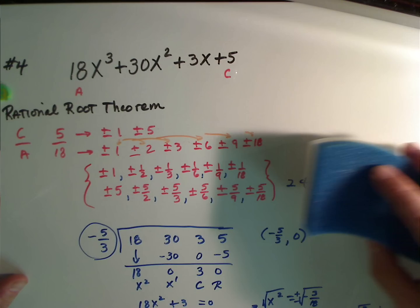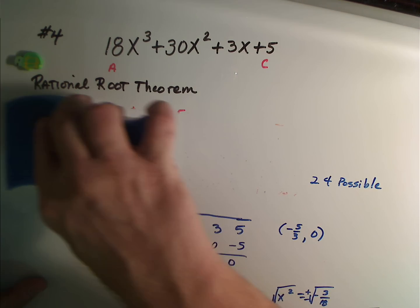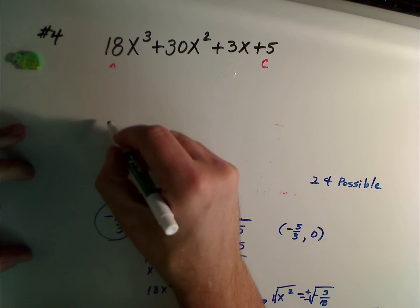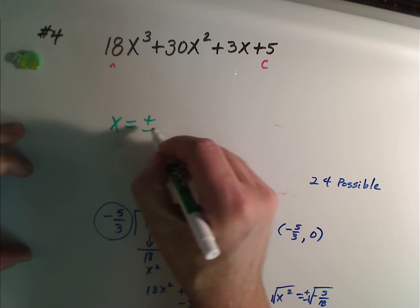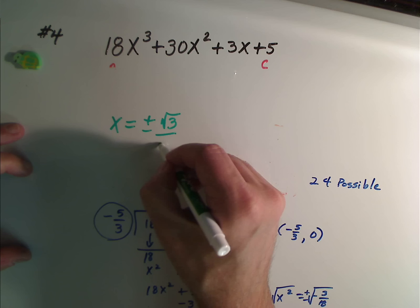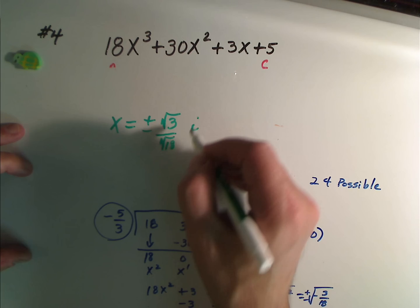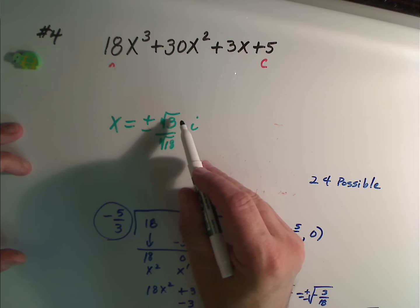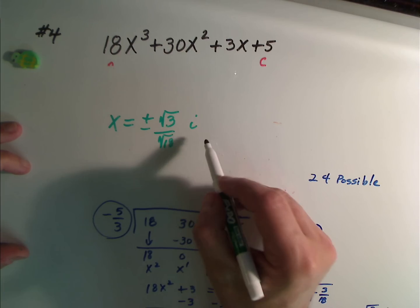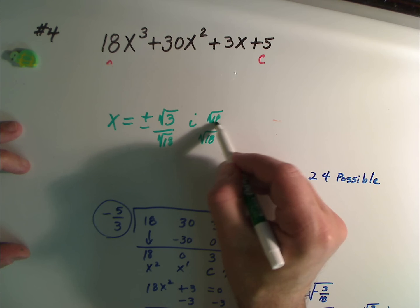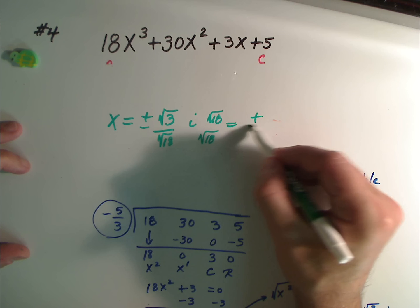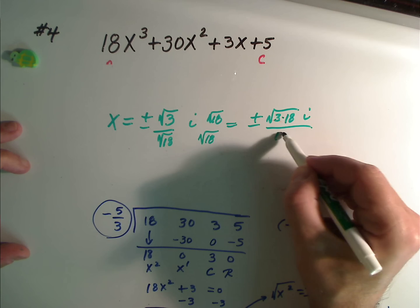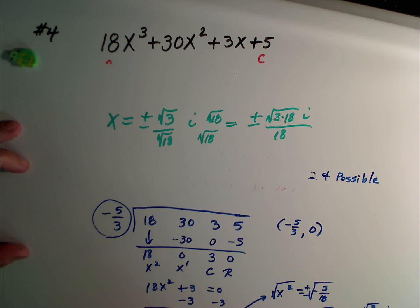Since we no longer need these rational roots, and these came in handy already, I want to work on where we're at now, which was that x had to equal plus or minus the square root of 3 over the square root of 18, i for imaginary. The square root of 18 can be simplified, but truthfully, we need to multiply top and bottom by radical 18 to rationalize it. This means that we are now at plus or minus the square root of 3 times 18, i over 18.